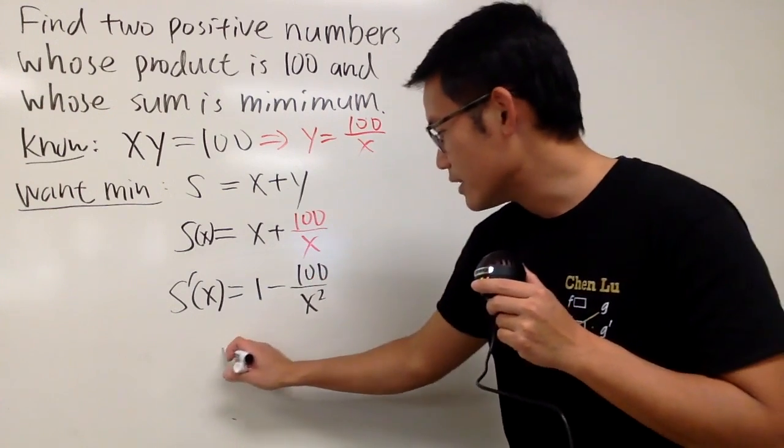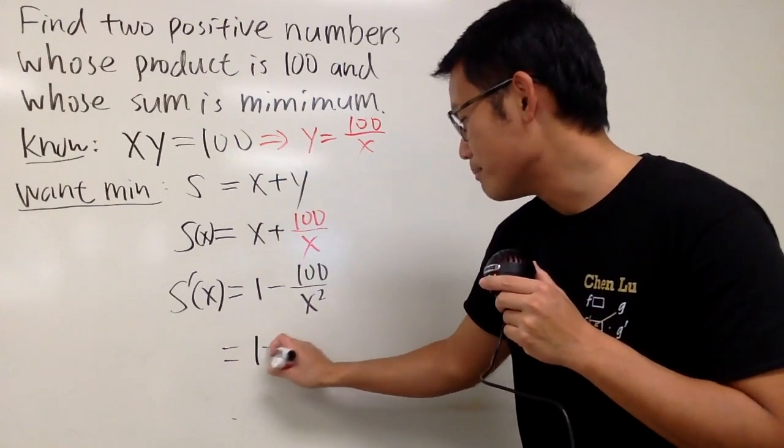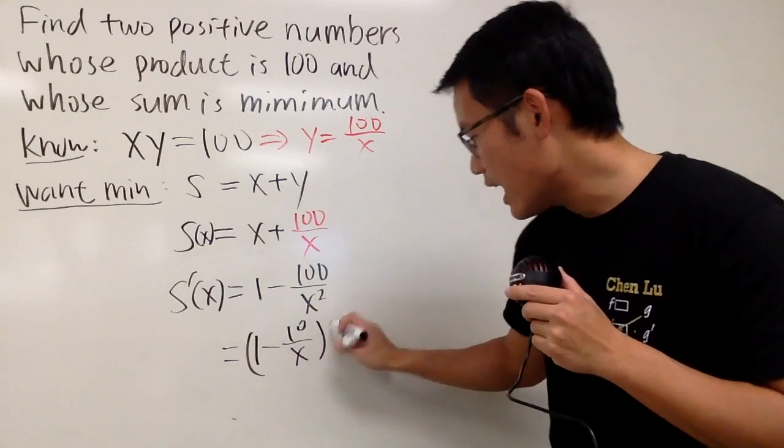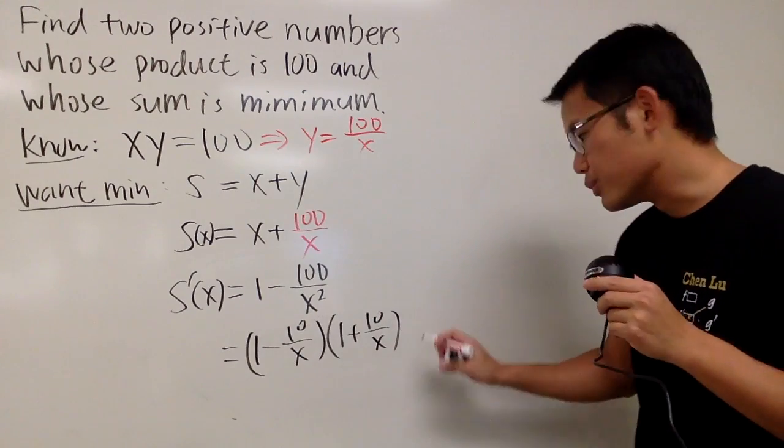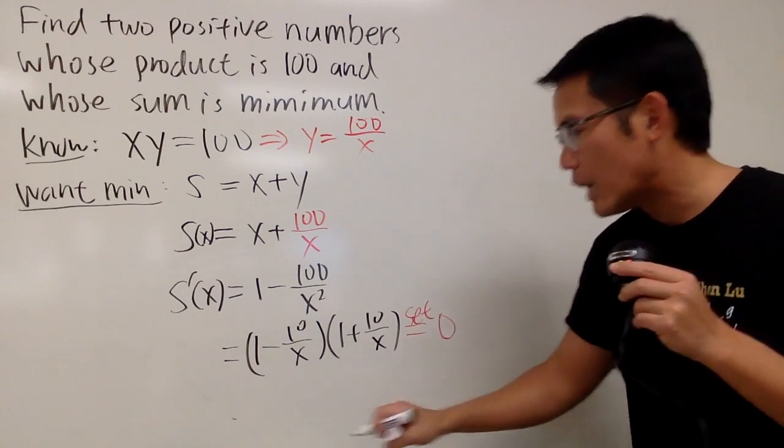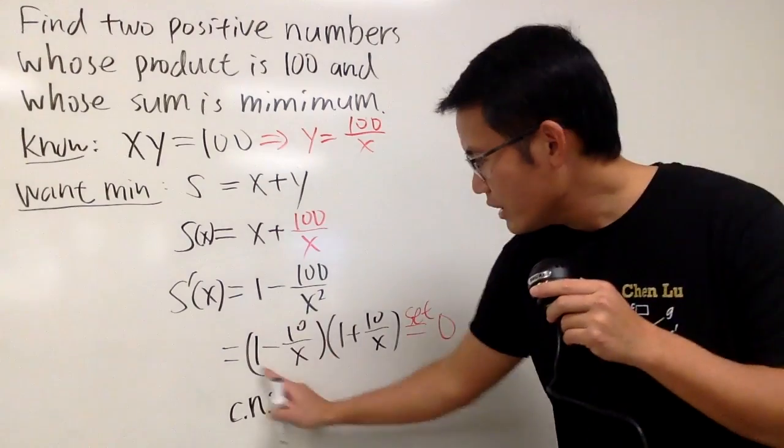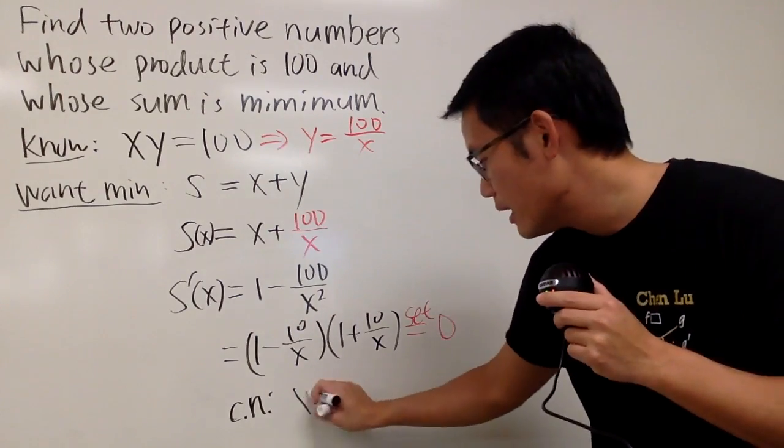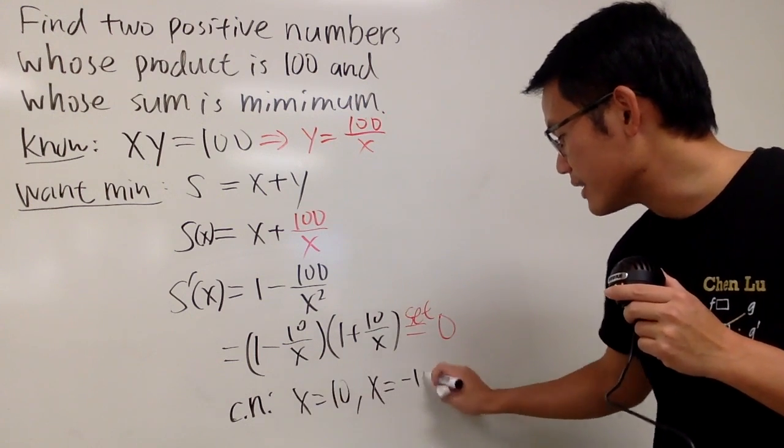And in fact, let me factor this a little bit. This is the difference of two squares. So I will go ahead and do 1 minus 10 over x times 1 plus 10 over x. And as usual, let's go ahead and set this to be 0 so we can find out our critical numbers. From here, as we can see, we need x to be 10. And from here, we can see that we need x to be negative 10.